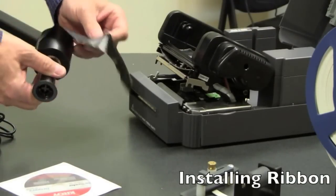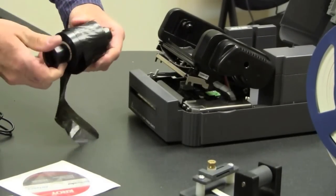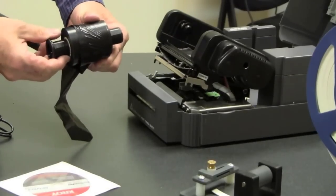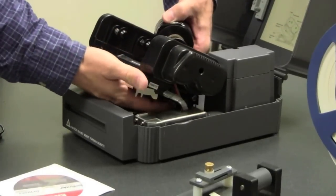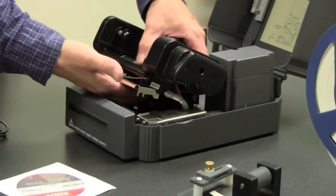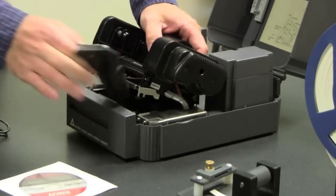Installing the ribbon, you will take one of the spindles. Make sure the flange portion is on the right side. You will put the ribbon on so the ribbon is going in a clockwise fashion. You will install this ribbon on the back spindles of the printer. Pull the ribbon through the printer.